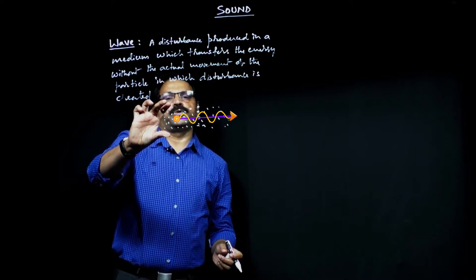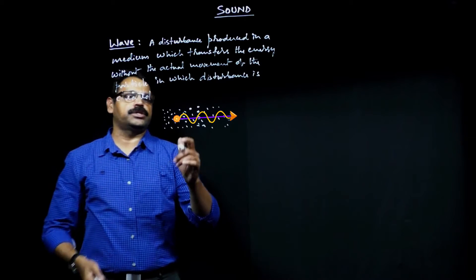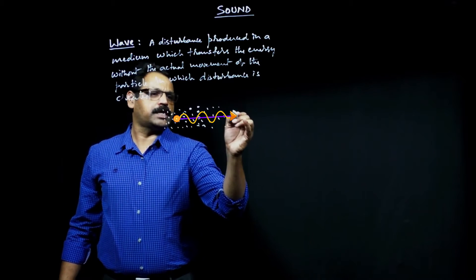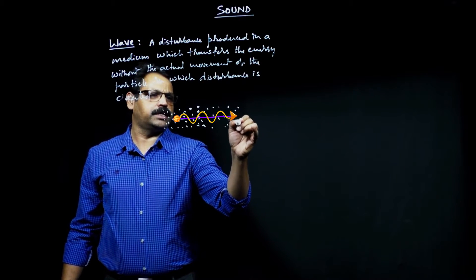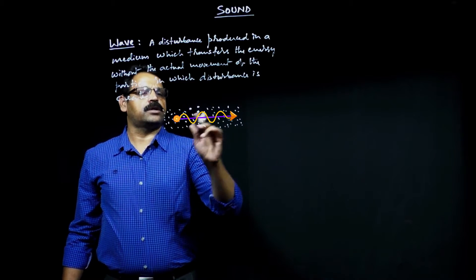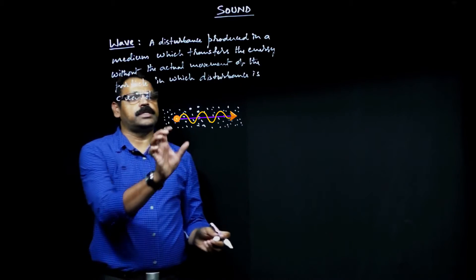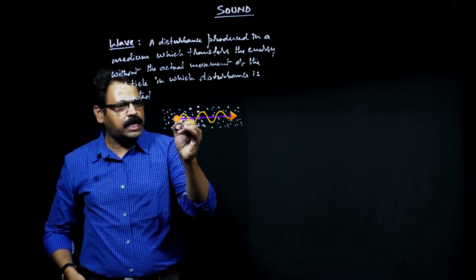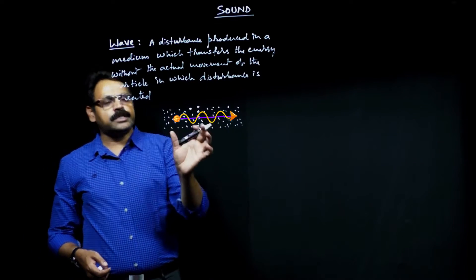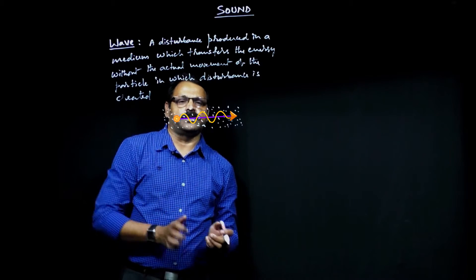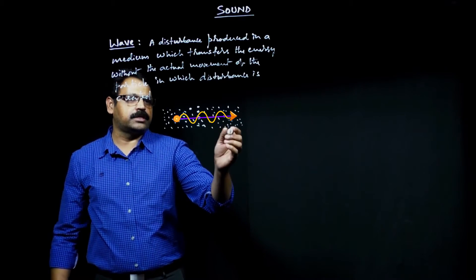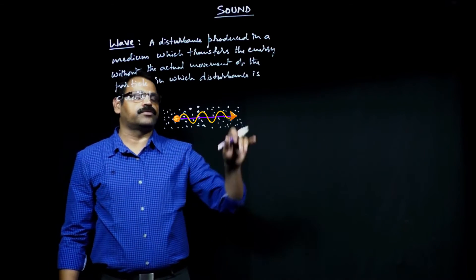The definition of a wave is: suppose a disturbance is produced here and it has to be carried to another point through medium particles. These medium particles are not getting disturbed — there is no actual movement of these particles — but still the disturbance is transmitted. This is the wave mechanism: the method of transportation of energy from one region to the other without the actual movement of the particles.